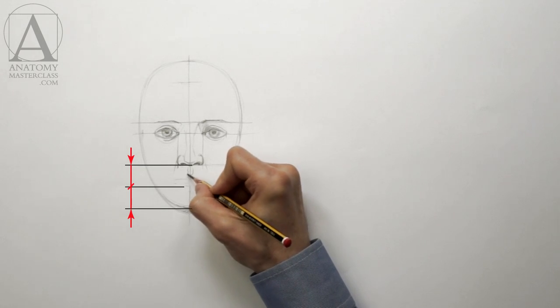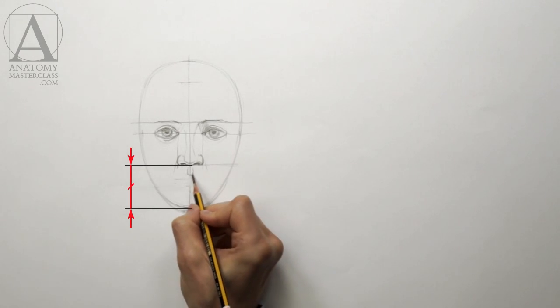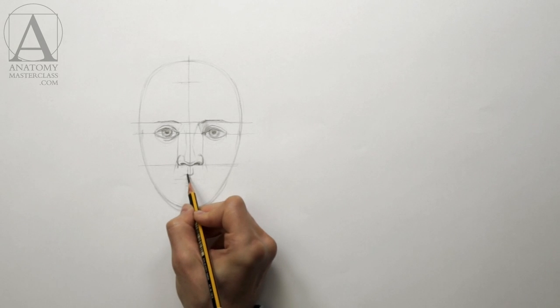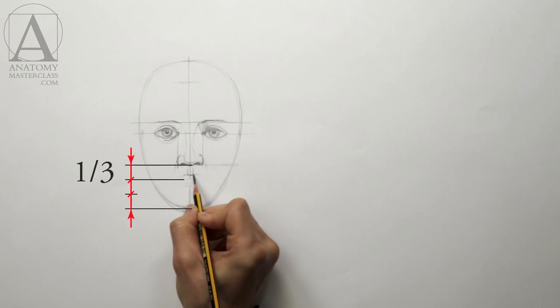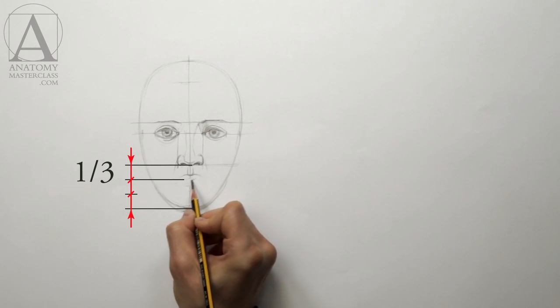In this sketch, it is actually the bottom edge of the lower lip that touches that middle distance. So, the line between the lips is about a third of the way from the base of the nose.